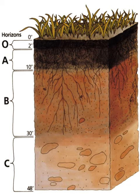Ultramicropores are suitable for habitation by microorganisms. Their distribution is determined by soil texture and soil organic matter, and they are not greatly affected by compaction. Size: 0.1 to 30 micrometers.